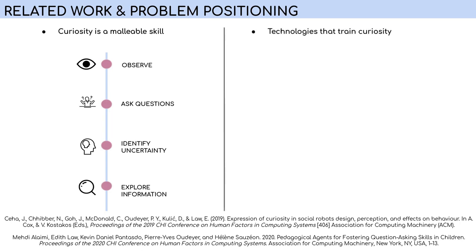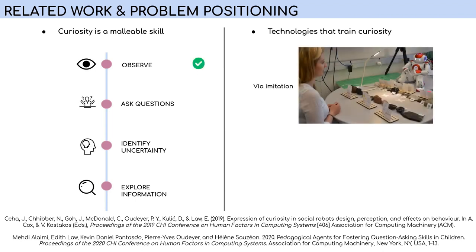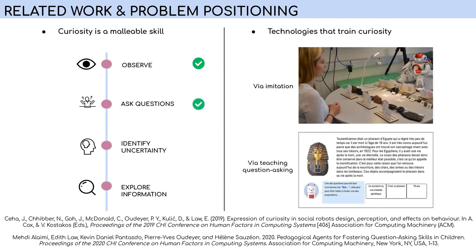Previous work have explored using new technologies to this end. For example, Siha and colleagues use social robots that exhibit curiosity-driven behaviors and investigate if children can catch these kinds of behaviors. Alaymi and colleagues propose a training to help children practice asking questions as it is the primary expression of curiosity. Both studies showed positive results on children's short-term curiosity scores, but both studies also did not explore training the metacognitive mechanisms that are involved in eliciting curiosity as suggested by our model, nor did they explore the link with children's learning strategies and outcomes.